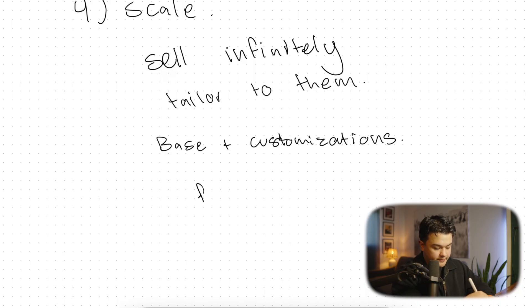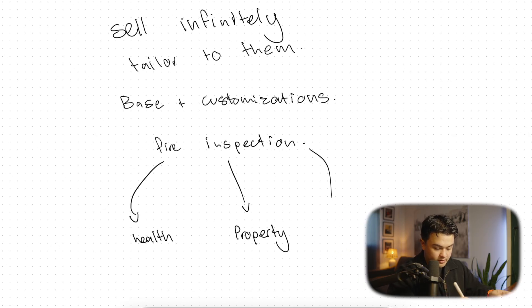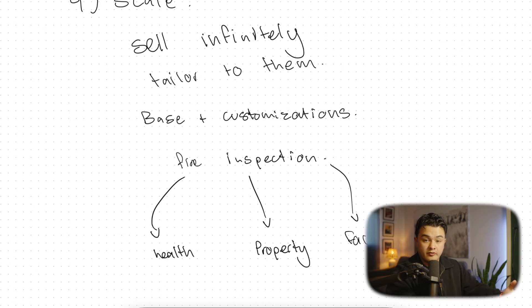Or you can even find other companies that you just have to rebrand it for them. For example, my fire inspection application. I can go to other inspection companies that have pretty similar workflows and just adjust it based on their niche. So I can go to health inspection, I could go to property inspection, I could go to maybe equipment or factory inspections. I have a base inspection CRM that I've built out, and now I just need to make slight modifications based on the client.